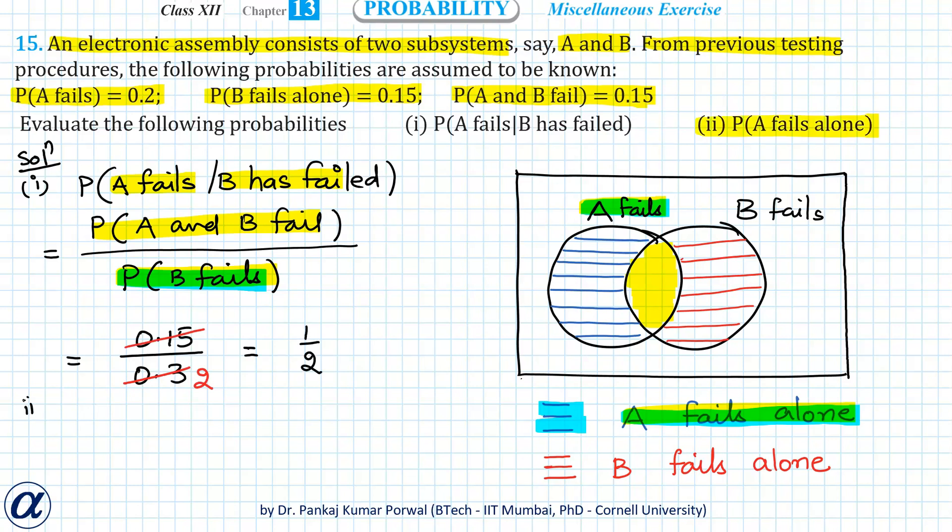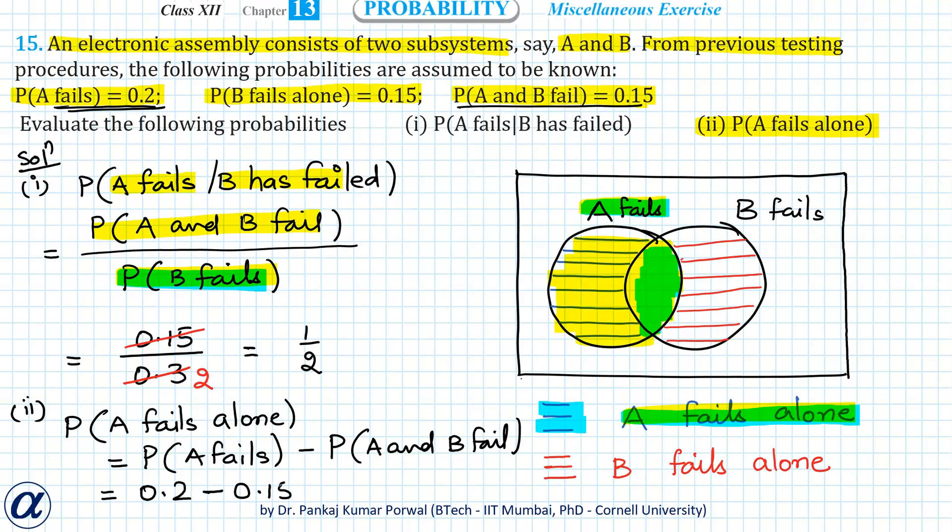In the second part, we want to find probability A fails alone, and that will be equal to the difference of event A and intersection of A and B. So that will give me probability of A fails, that is 0.2, minus probability A and B fail is 0.15, that gives me 0.05.